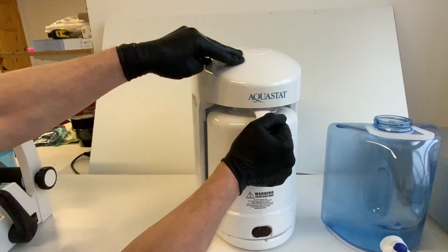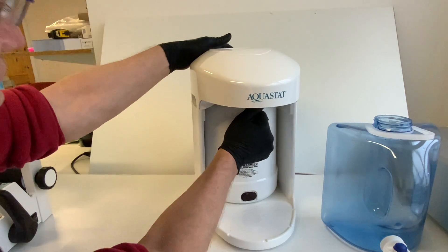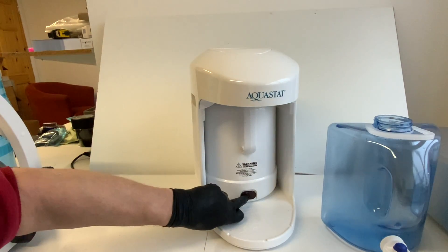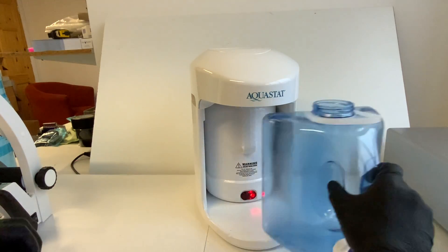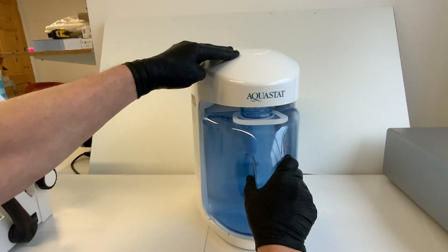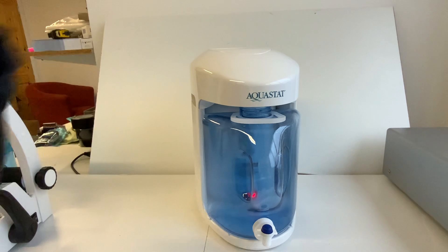You place the jug firmly, push, press the button to turn it on, and then the water container can be placed in position.